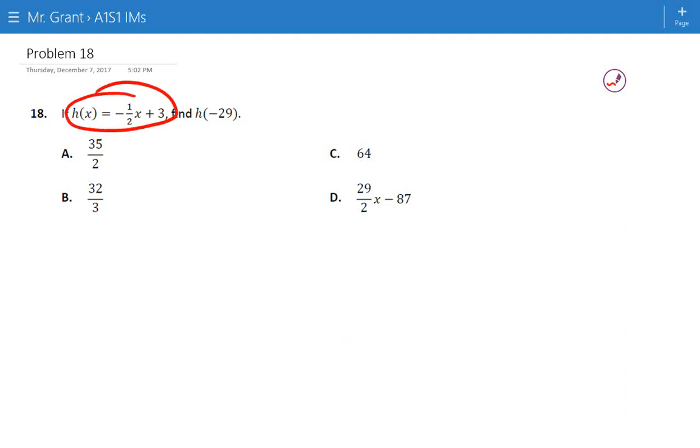Usually first they'll give you a rule and what they've done is they have called their rule H. This is the name of the rule, right, and why do they use such a boring name? I don't know. If I were doing this maybe I would call my rule CoolMathRule of x equals negative one-half x plus three.